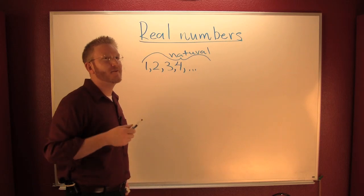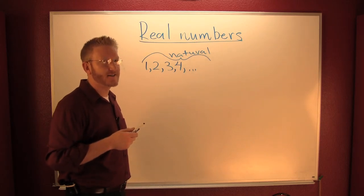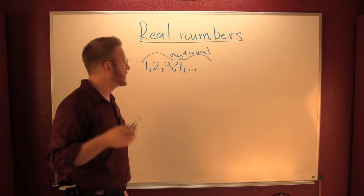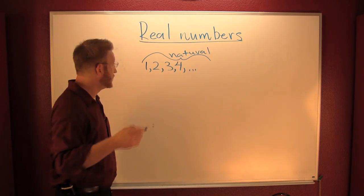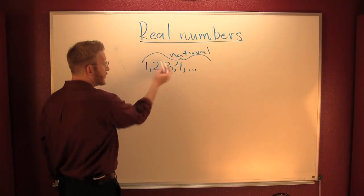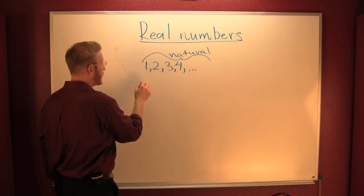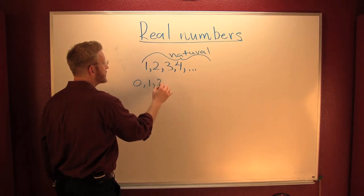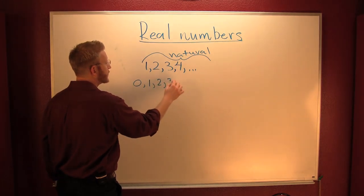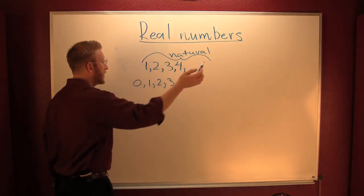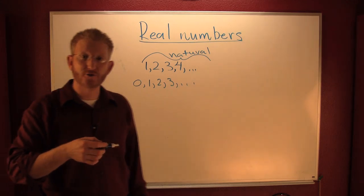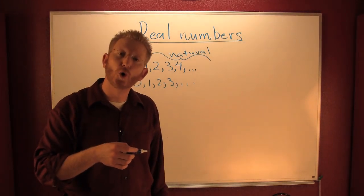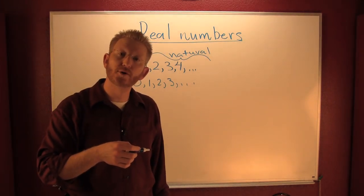No, man. There's one number that's not positive and not negative. We need to have this idea of nothing. What I want to do is I want to take zero and I want to add it to the natural numbers — one, two, three. When I add zero to the natural numbers, we call these the whole numbers.